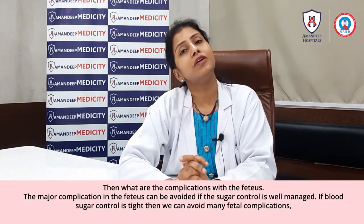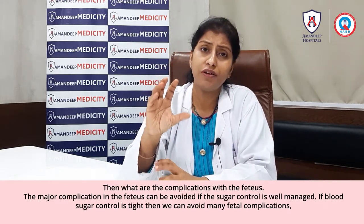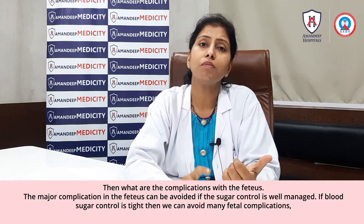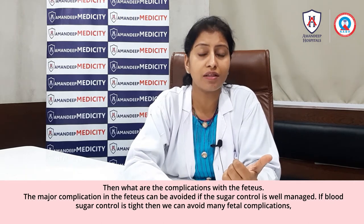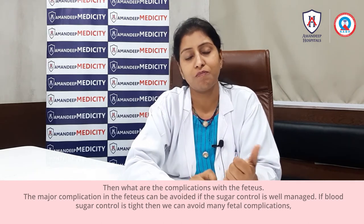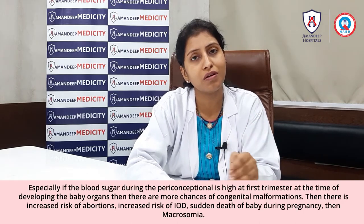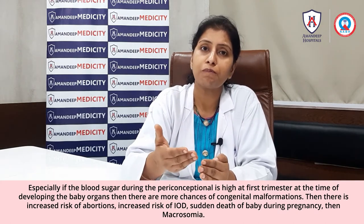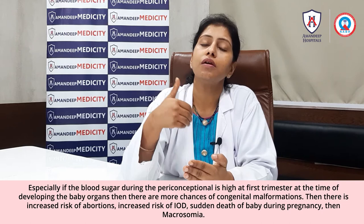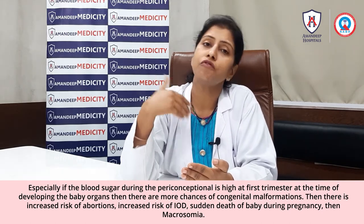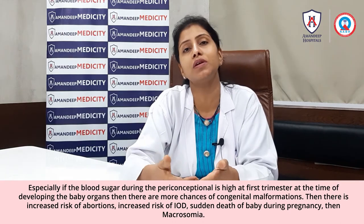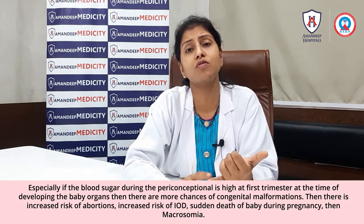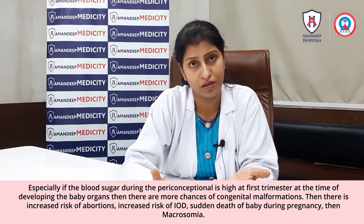What are the complications in the fetus? The major fetal complications can be avoided if sugar control is well managed. Especially if blood sugar is high during the periconceptional period and first trimester — when the baby's organs are forming — there are significant chances of congenital malformations. There is also increased risk of abortions and IUD, which is sudden death of the baby during pregnancy.